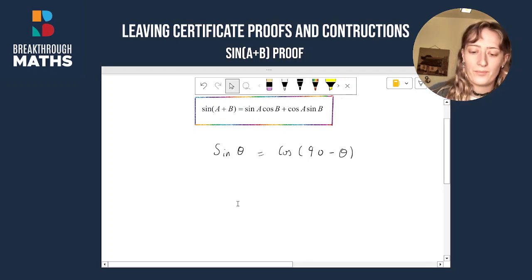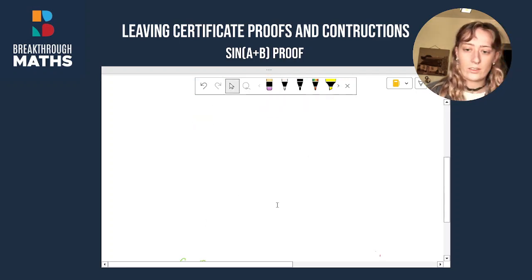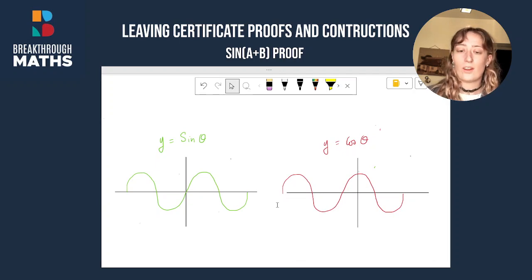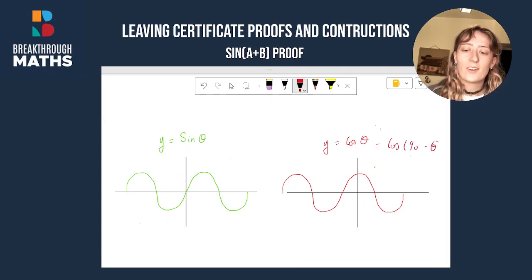Let me show you where that is. Let's have a look here. On the left-hand side I've got a sine graph, y equals sine theta. On the right-hand side we've got a cos graph. I'm going to change this cos graph to a cos 90 minus theta graph.